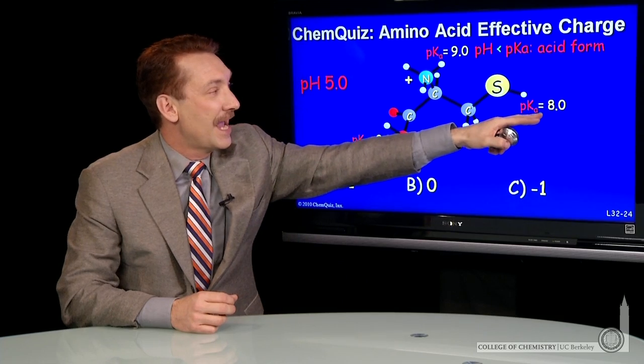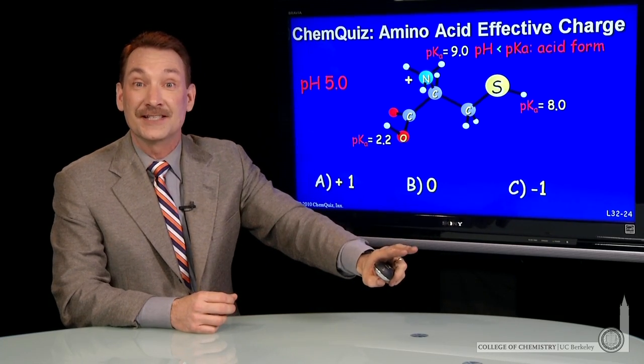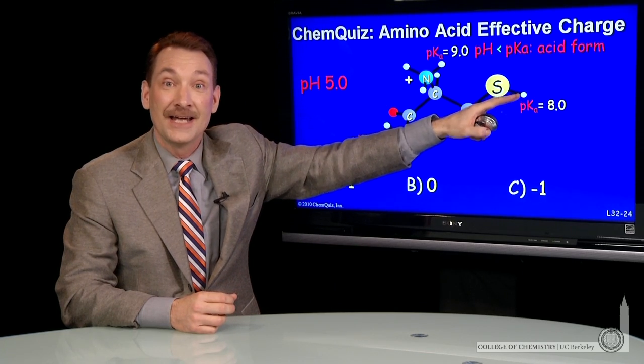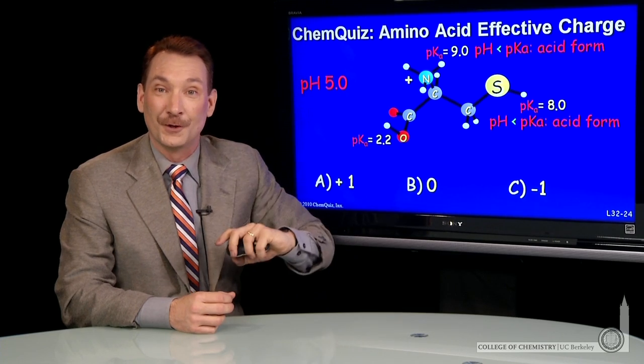Now, here pKa 8, again, the pH is 5, well to the acidic side. So the acidic side here is predominating, and the acidic side is the one with the proton attached. So the acidic form is the one with the proton attached. For this sulfurous side group, that's neutral.